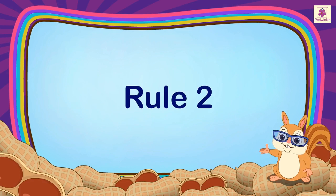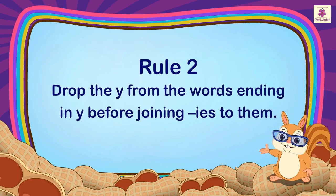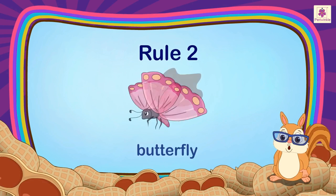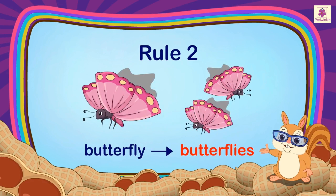Rule 2: Drop the Y from words ending in Y before joining IES to them. For example: Butterfly becomes Butterflies.